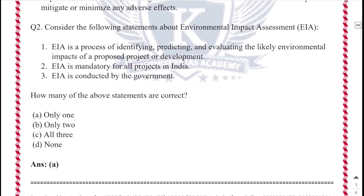Question 2: Consider the following statements about Environmental Impact Assessment. Statement 1: EIA is a process of identifying, predicting, and evaluating the likely environmental impacts of a proposed project or development. This statement is correct. Statement 2: EIA is mandatory for all projects in India. This statement is not correct because it is only mandatory for certain categories of projects listed in the Environmental Impact Assessment Notification 2006.